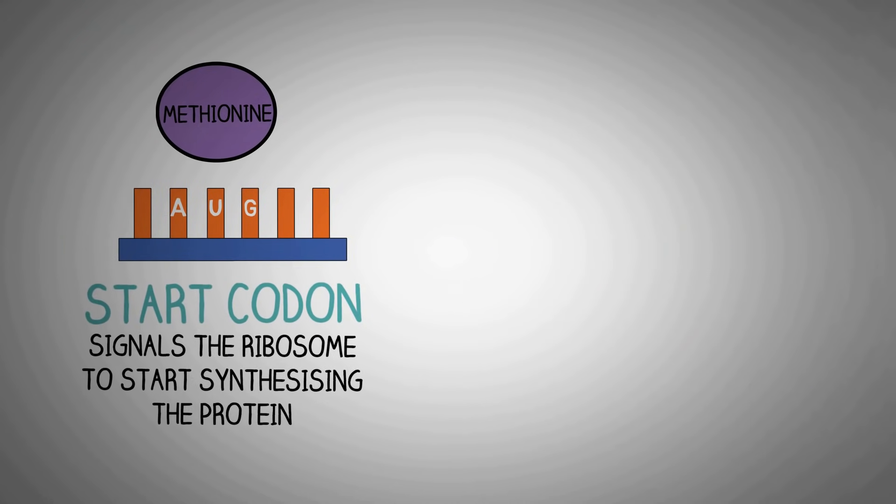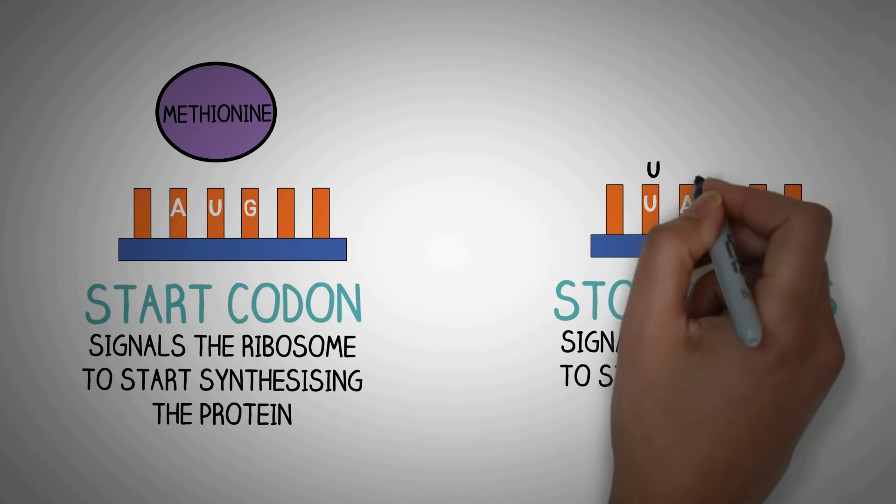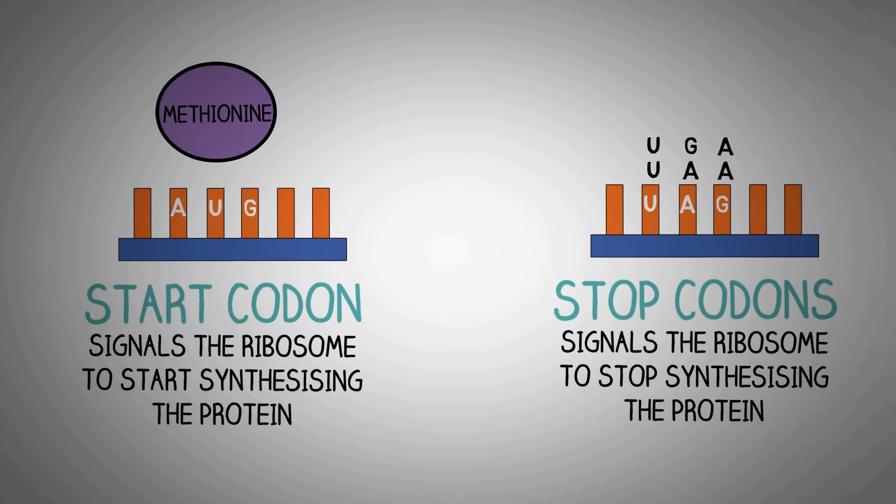Similarly, we have three special codons which signal the ribosome to stop synthesizing the protein. These are UAG, UAA and UGA. These are known as stop codons and when the ribosome reads these, they know that the protein is now complete and their job is done.